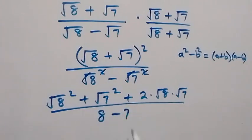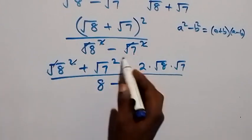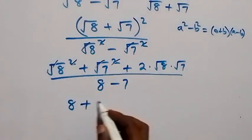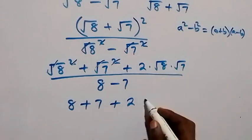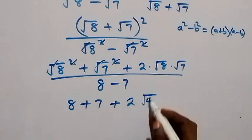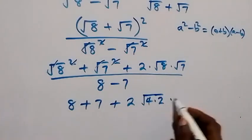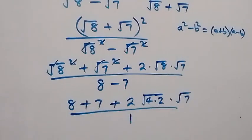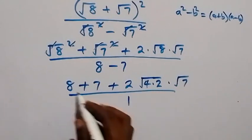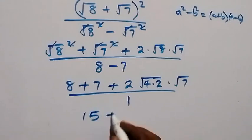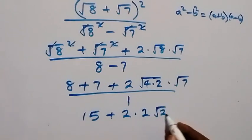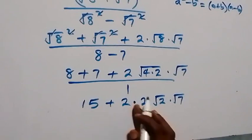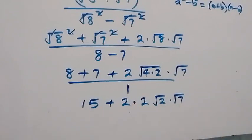So the numerator is 8 plus 7 plus 2 times root 8 times root 7, all over 1. That is 15 plus 2 times root 8 times root 7. Now root 8 is the same as root 4 times 2, which simplifies to 2 root 2. So we have 15 plus 2 times 2 times root 2 times root 7, over 1. That gives us 15 plus 4 root 14.